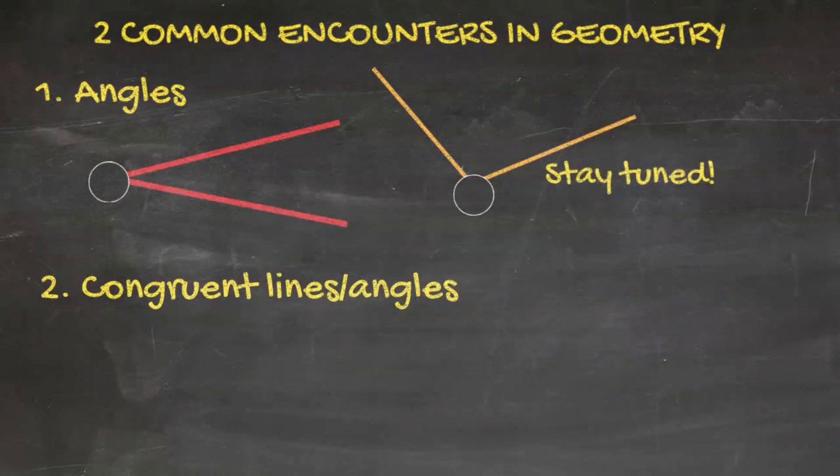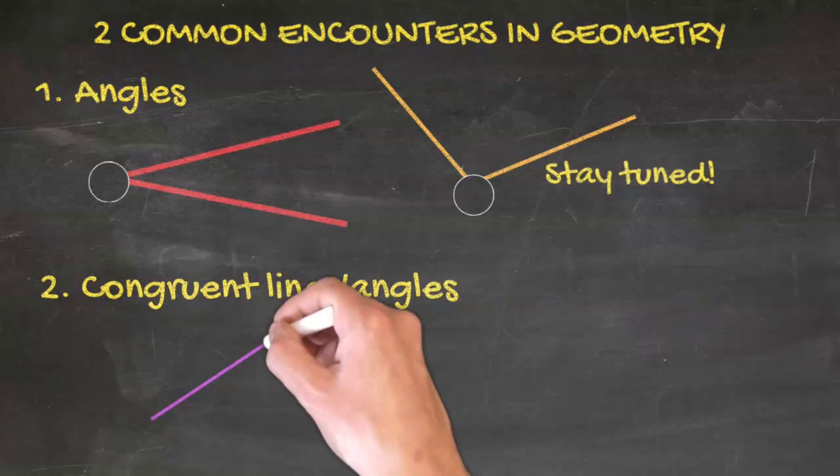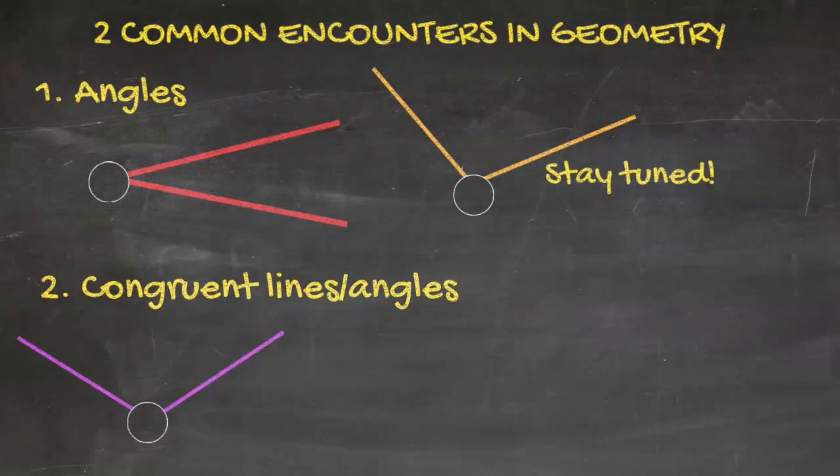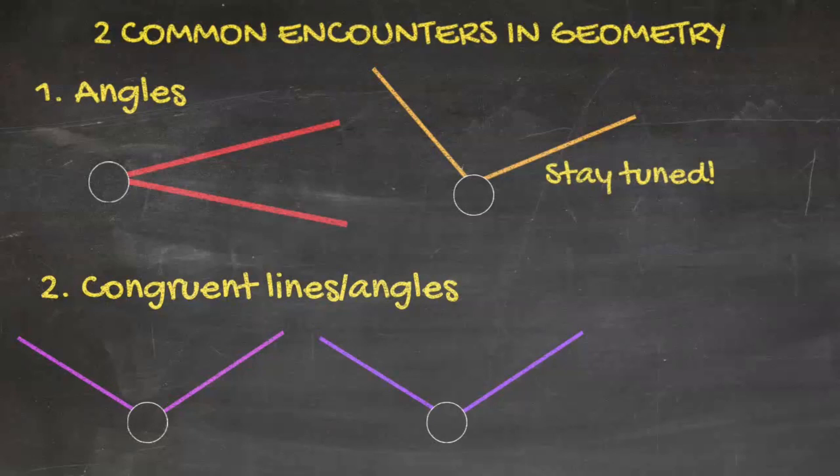The next common encounters are congruent lines or angles. Congruent lines or angles are two lines or angles with the same measure. For instance, the pink and the purple angles are congruent since they have the same measure.